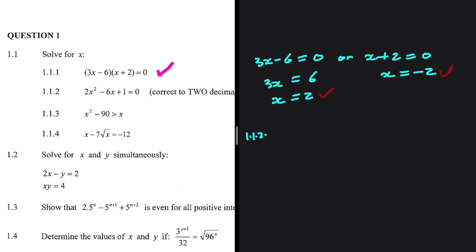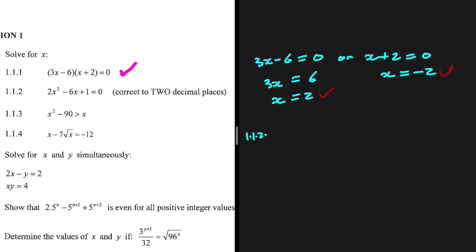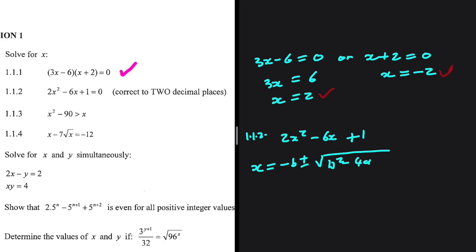1.1.2. We're supposed to solve for 2x squared minus 6x plus 1, correct to two decimal places. That just tells us that we need to use the quadratic formula. We're going to have x equals minus b plus or minus the square root of b squared minus 4ac, everything divided by 2a.